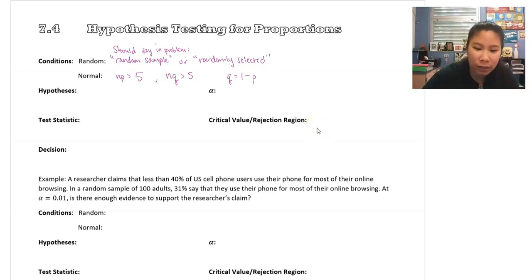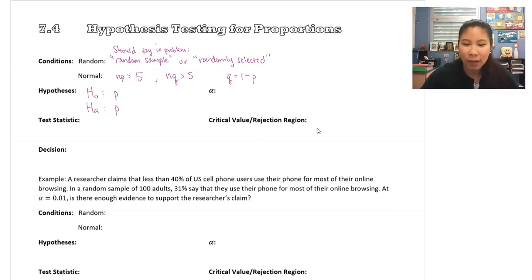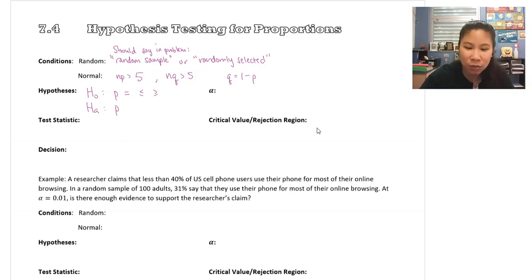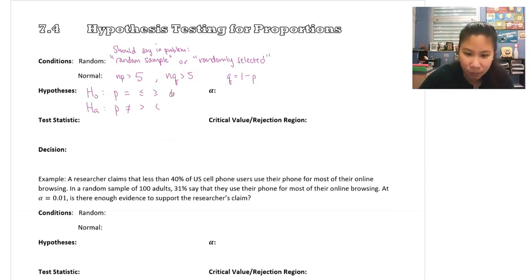For our hypotheses, we are still writing an Ho and an Ha for the null and the alternative hypothesis. But this time, instead of using mu — because mu stood for the population mean — since we're dealing with proportions now, we use p, p for proportions. The same rules apply for symbols: in Ho, it either has to have the equal sign, the less than or equal, or the greater than or equal. For Ha, you choose the opposite. If Ho was equal, Ha would be does not equal; if Ho was less than or equal to, Ha would be greater than. The number itself is going to be a decimal since p is a proportion, and it's the same decimal for both Ho and Ha.